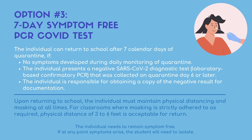Option three: a seven-day quarantine, returning on day eight after presenting a negative COVID-19 test. If you choose this option, your child can return to school after seven calendar days of quarantine if they remain symptom-free during the seven-day quarantine and if they take a laboratory-based PCR COVID-19 test on day six or later of quarantine that produces a negative result. The family is responsible for obtaining and presenting that negative test result. Once returning to school, the child must remain symptom-free through day 14, maintain physical distancing and masking at all times. For classrooms where masking is strictly adhered to as required, physical distancing of three to six feet is acceptable for return.